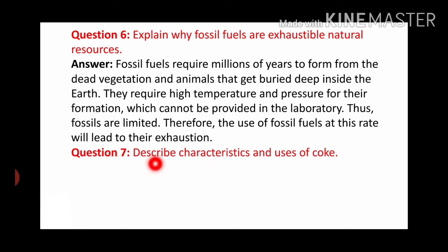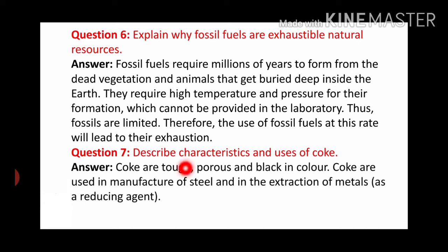Next question is: Describe characteristics and uses of coke. Answer is: Coke is tough, porous, and black in color. This is the characteristic - it is tough, porous meaning it has tiny holes, and it is black. Coke is used in the manufacture of steel and in the extraction of metals as a reducing agent.